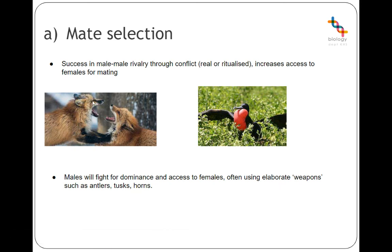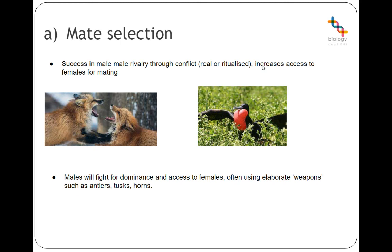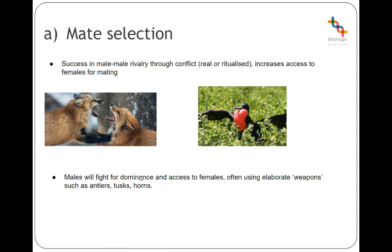Some males who have no chance of reaching the lek sometimes mimic the appearance of females, wandering around with the females and sneaking mates when no one's paying attention. Lekking behaviour reduces conflict because there's no fighting — just the most attractive males with the best displays getting to mate. This reduces danger from physical conflict. However, there are species like foxes, deer, and bears that do have real physical contests. Both ritualised and real mate conflicts between males increase access to females for the winning males, so it's worth participating. Males fight for dominance using elaborate weapons such as antlers.